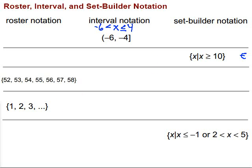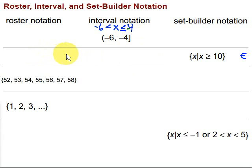Let's go ahead and make some conversions. First, we're given an interval — a chunk from the number line — and I'm asked to write it in roster notation. Can I list out all the numbers that would fall between negative 6 and negative 4, including negative 4? No, I can't, because due to the density property, between any two numbers there's always another number. So there's no way to list every single number in that interval. Roster notation can't be done here.